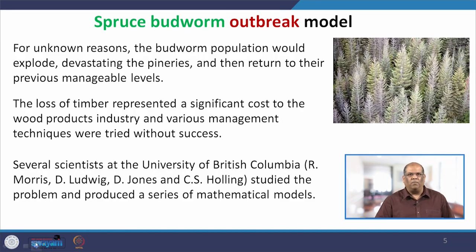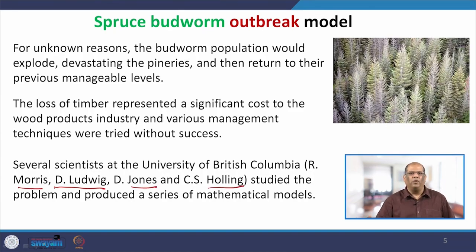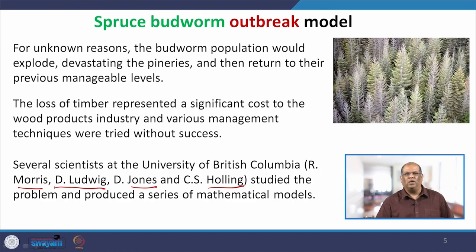This problem was studied by many mathematical modelers — several scientists at the University of British Columbia. The big names are Ludwig, Morris, Jones, and Holling. They studied this problem and produced a series of mathematical models. This is basically the background of the Spruce Budworm outbreak model. What we will do here is take one such model and show you how you can make the whole model dimensionless using the process of scaling.